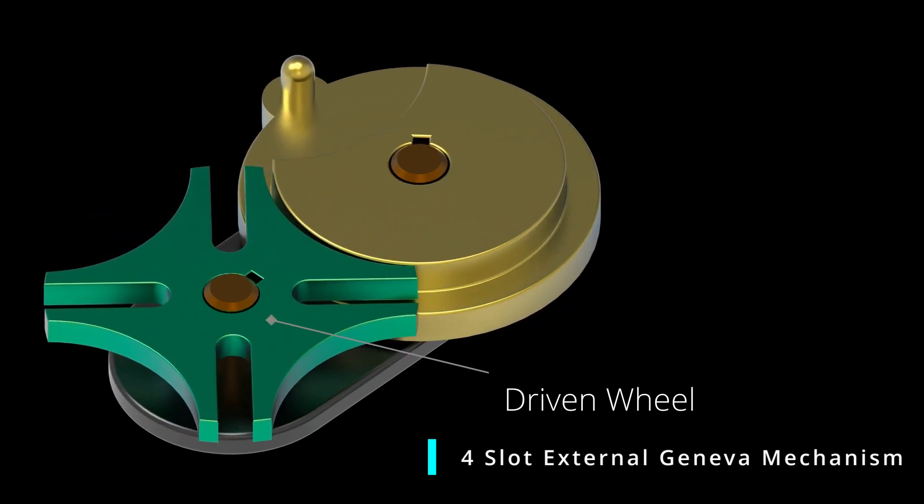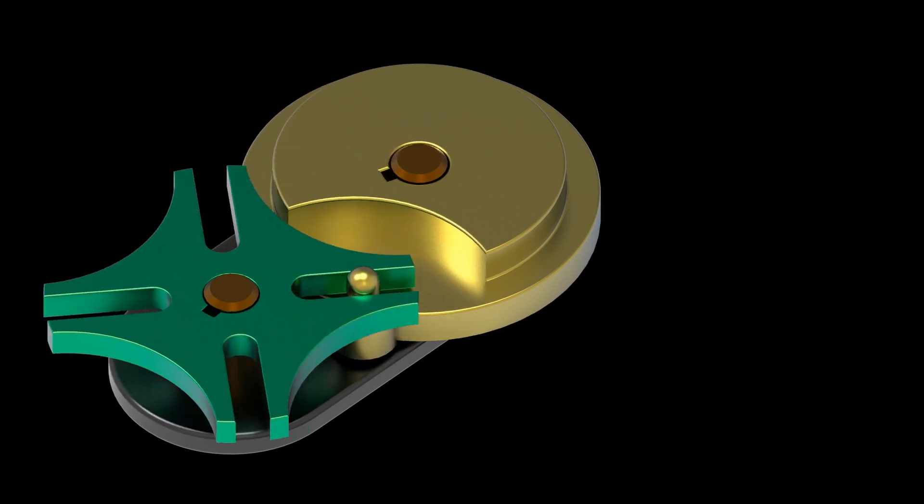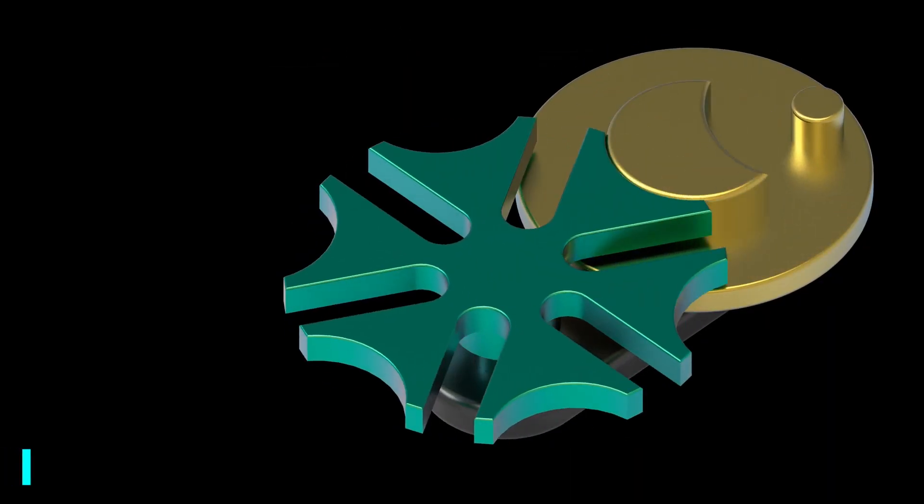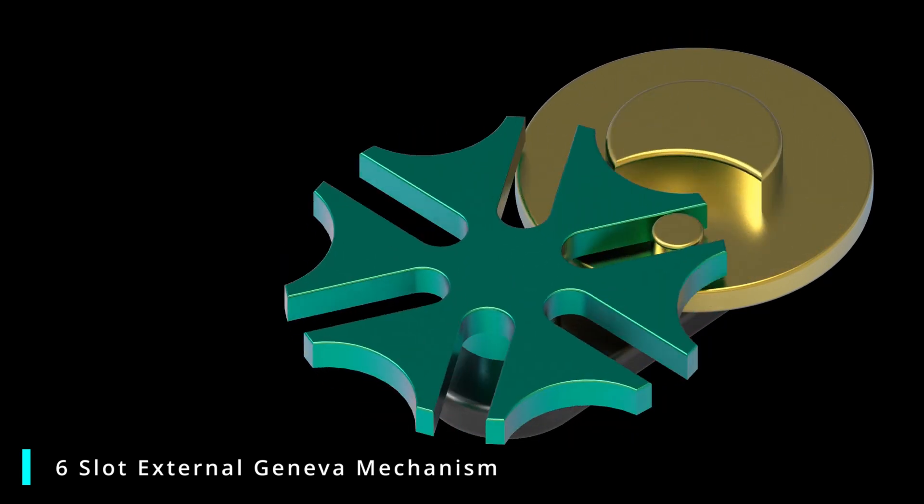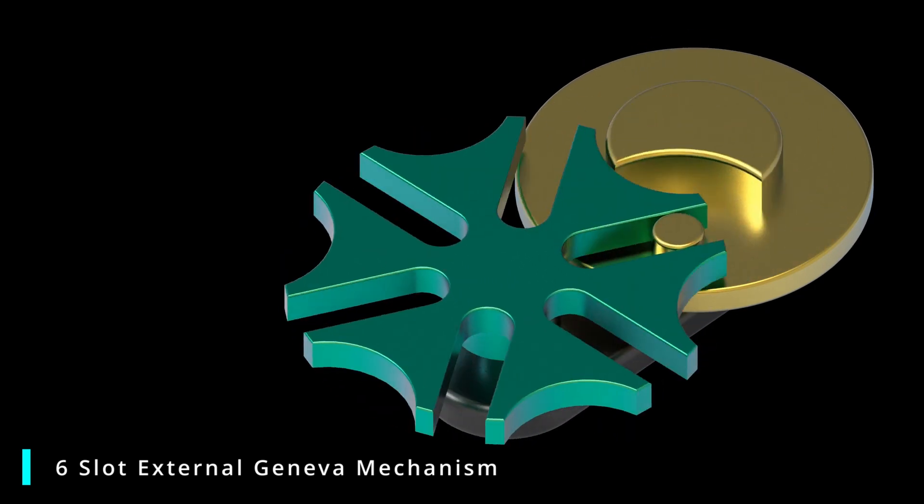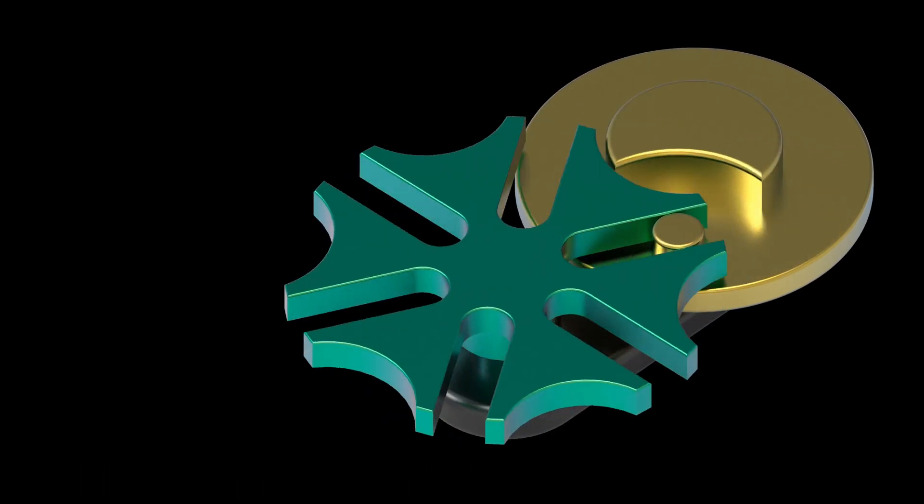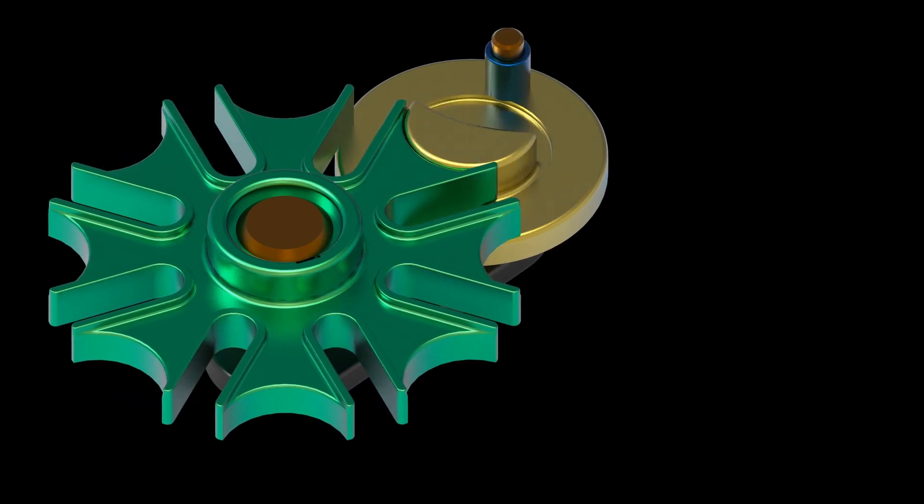The basic structure of the Geneva mechanism consists of a main gear, a cam, and a follower. The main gear is typically mounted on a shaft and rotates around its axis. The cam is a shaped piece of metal that is attached to the main gear and has a series of notches or indentations along its circumference. The follower is a rod or lever that is connected to the cam and moves back and forth as the cam rotates.